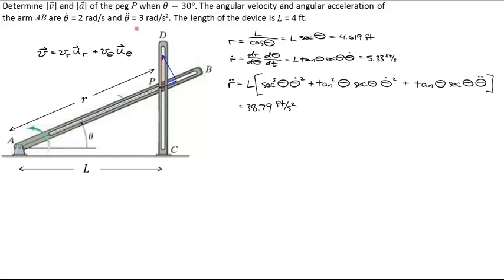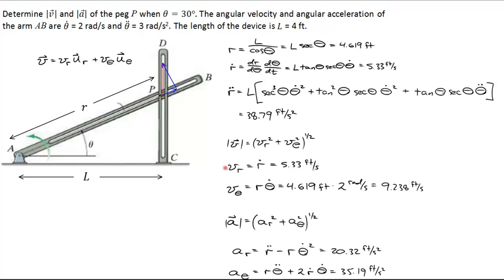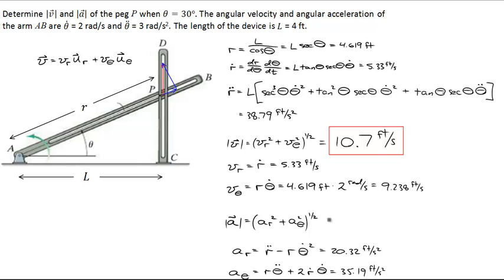Now we know r, r-dot, r-double-dot, theta, theta-dot, and theta-double-dot, and we're ready to plug into the original expressions. vr equals r-dot equals 5.33 ft/s, and v-theta equals r times theta-dot equals 4.619 feet times 2 rad/s, giving about 9 ft/s. The radial acceleration a_r comes out to just over 20 ft/s², and the tangential acceleration a-theta is just over 35 ft/s². The magnitude of the velocity is 10.7 ft/s and the magnitude of the acceleration is 40.6 ft/s².